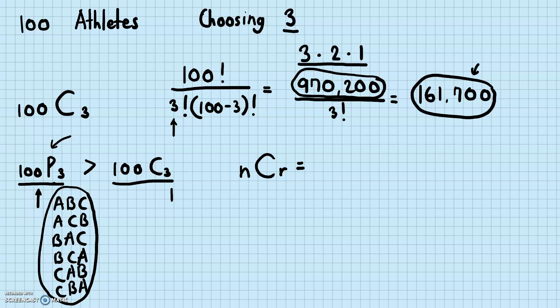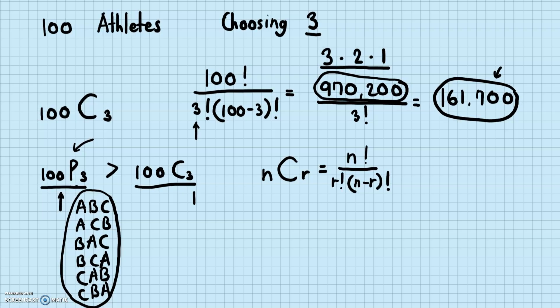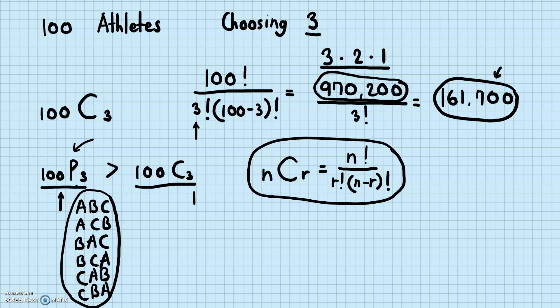Let's write the general formula for combination. If you have a group of n things and you want to know how many different ways you can choose r from n, without considering the order as important, that's going to be n factorial over (n minus r) factorial — that part was the permutation — divided again by r factorial, because r factorial is the number of ways that r items can be rearranged, and we're treating all those rearrangements as the same in combinations. So this would be the formula for finding combinations.